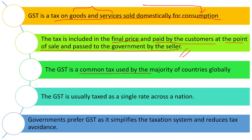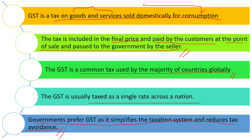GST is a common tax used in the majority of countries globally. GST is usually taxed as a single rate across a nation — one single tax rate throughout the country. Governments prefer GST because it simplifies the taxation system and reduces tax avoidance, as some people try to escape from paying tax, and those things can be avoided with GST.